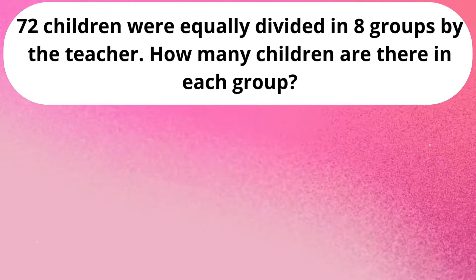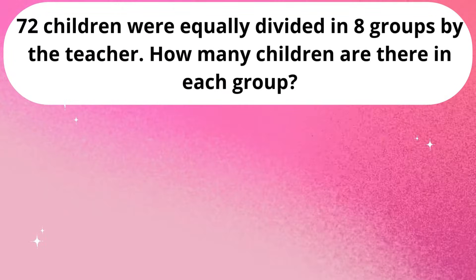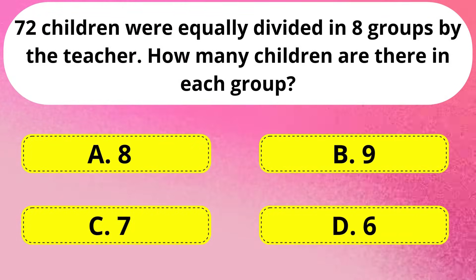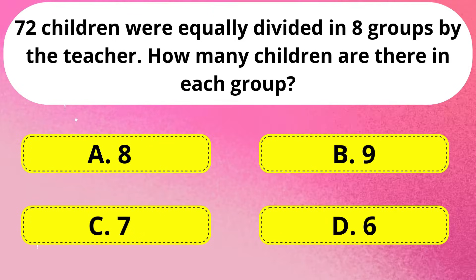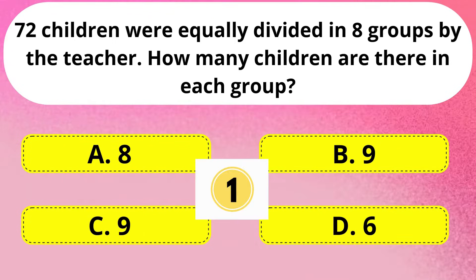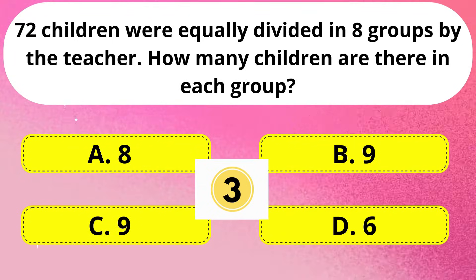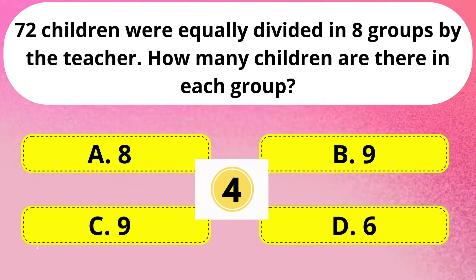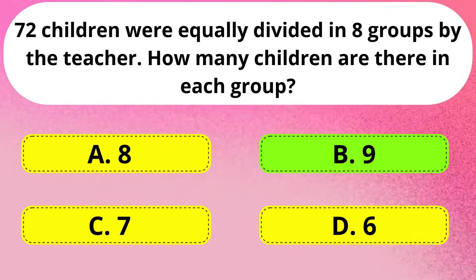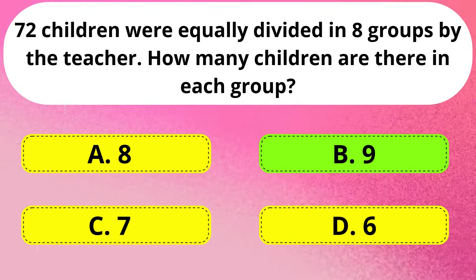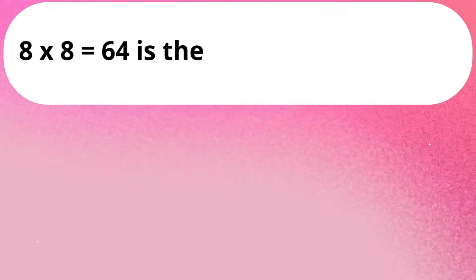Next question. 72 children were equally divided into 8 groups by the teacher. How many children are there in each group? Right answer is Option B: 9.